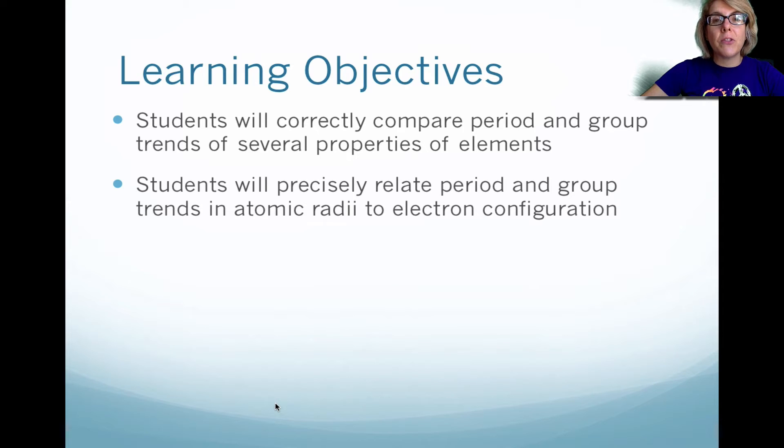Hi, this is Mrs. Brobel. This is Chapter 6, Periodic Table and Periodic Law, Video Part 2. In this video, we're going to be looking at the period and group trends of several properties of the elements, and then we're going to relate the period and group trends to atomic radii and electron configuration.